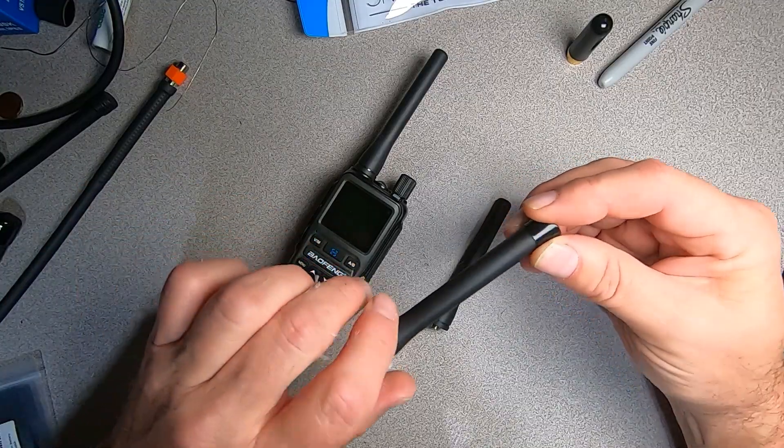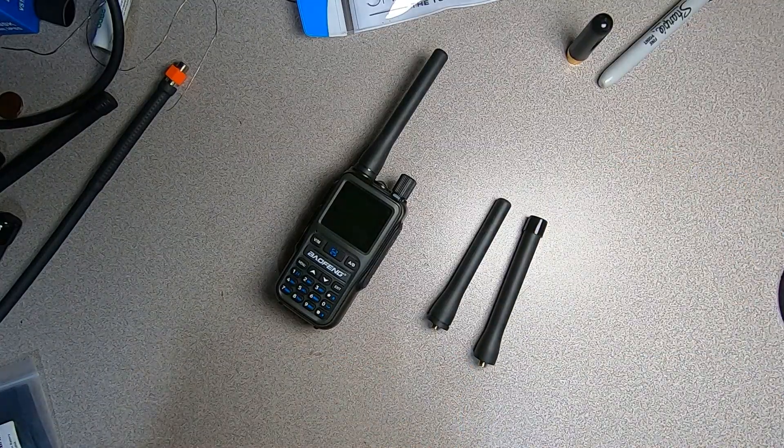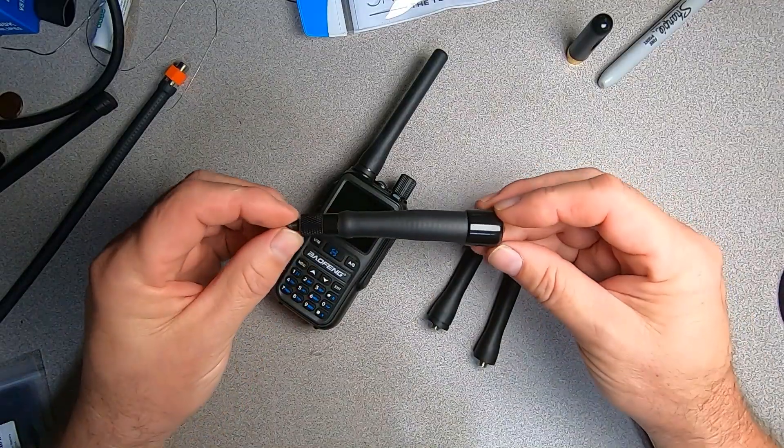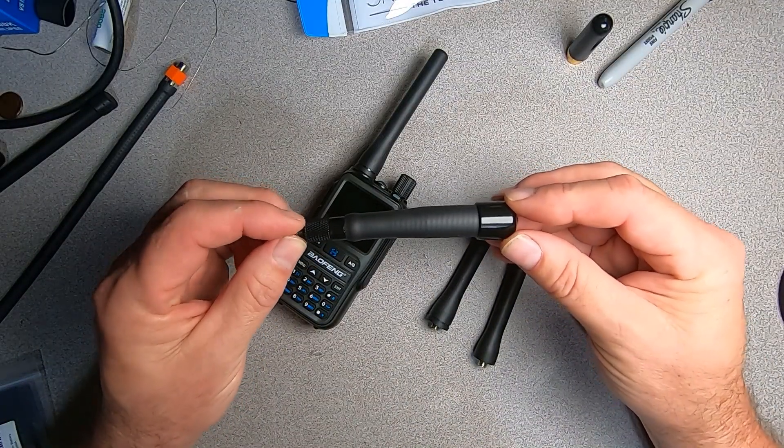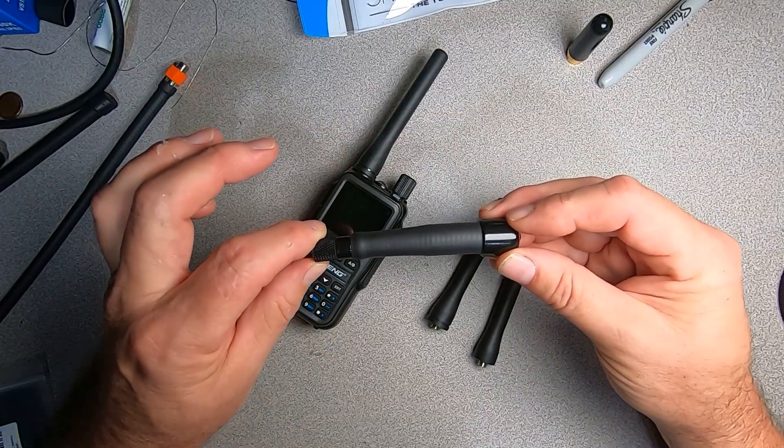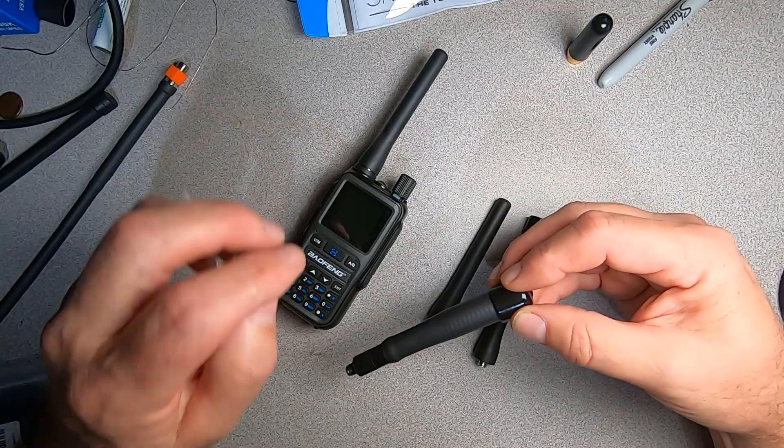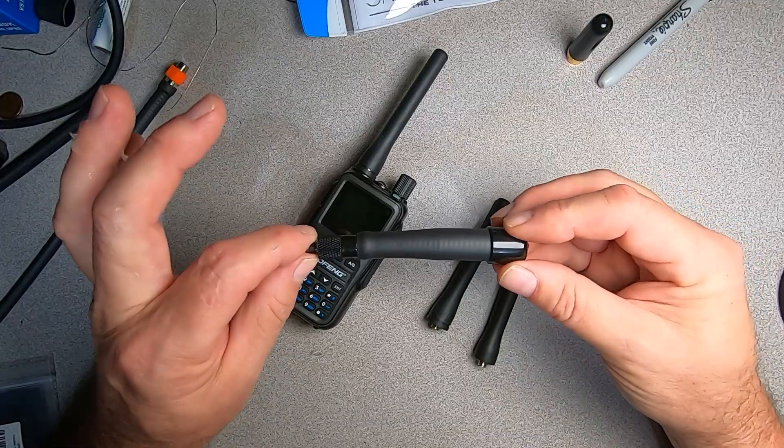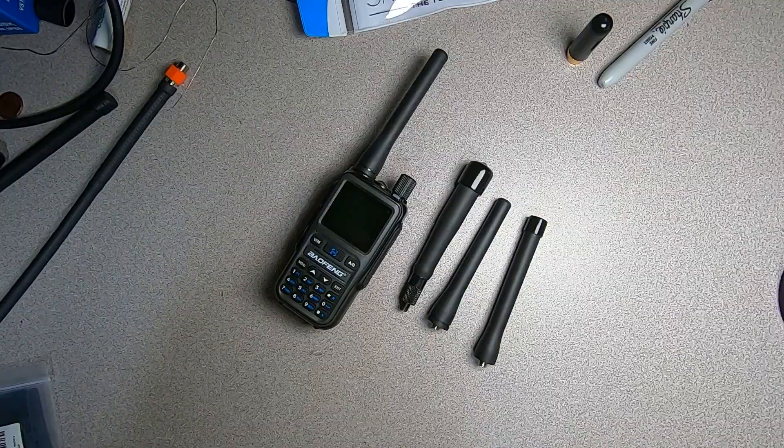The question is, how does this antenna compare to our factory Baofeng antenna, and how does it compare to what I consider to be the best of breed in shortened VHF vertical antennas, which is a Smiley 2-meter stubby duck? The stubby duck, although it's an excellent antenna, is the same price as you're going to pay for a Baofeng Mini. It's about $22. However, for our testing purposes, this is going to provide a great comparison.